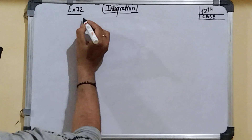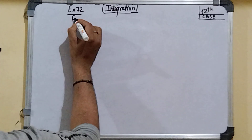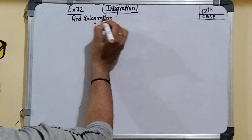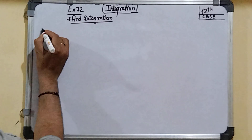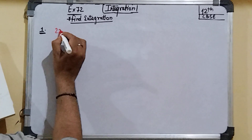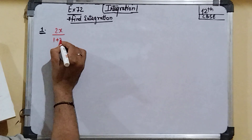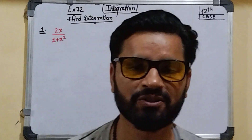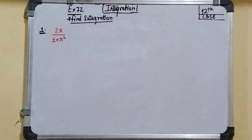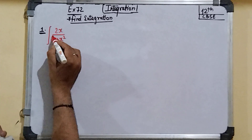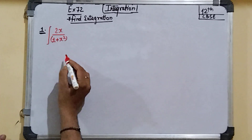The first problem asks us to find the integration of 2x upon (1 + x²). When you see this integral, it may look complex, but it is very easy to find the integration of this function.